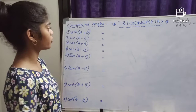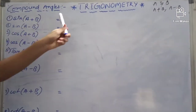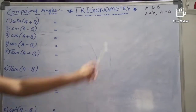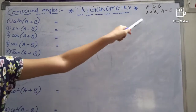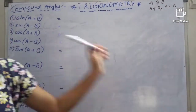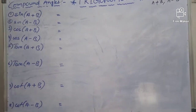Now, we are going to discuss about compound angles, which is a sub-chapter of trigonometry. If A and B are two angles, then A plus B and A minus B are compound angles. Now, we can derive some formulas.